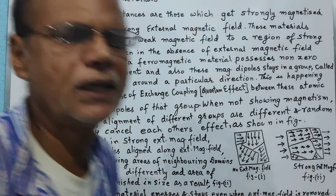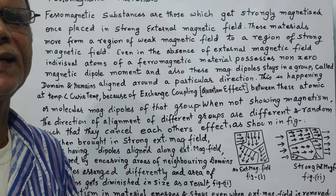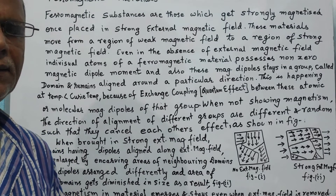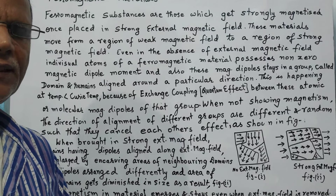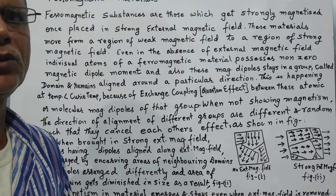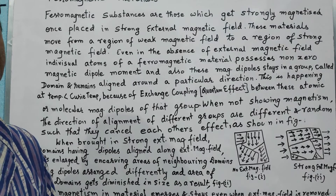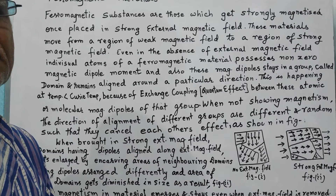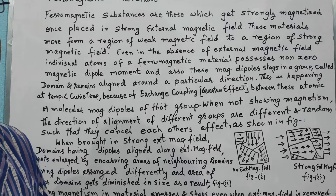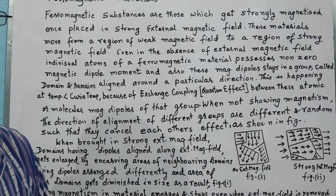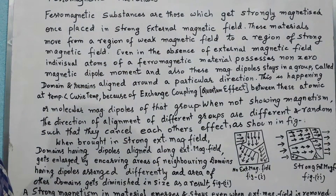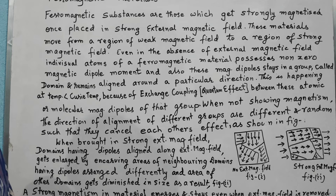Dear students, today we are going to talk about a third type of magnetic material known as ferromagnetic material. This type of magnetic material shows a behavior that occurs at a temperature lower than a particular temperature for that material known as Curie's temperature. Here we will see that the magnetism appears slightly differently in this case.